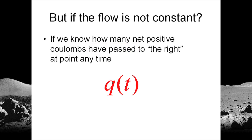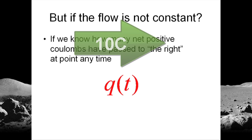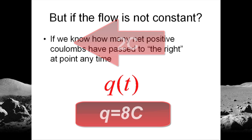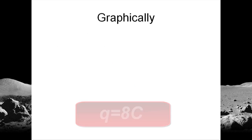Why net? Because we subtract the positive coulombs that come back. If 10 coulombs, positive coulombs, cross the checkpoint to the right, and 2 of them come back to the left, then the value of q is 8 at that point in time.